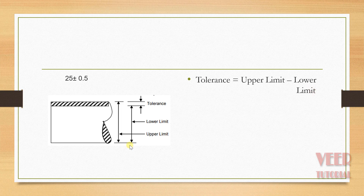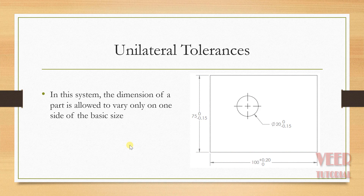So generally tolerances are of two types. First, we have unilateral tolerances. In this system, the dimension of a part is allowed to vary only on one side of the basic size. Suppose we want a dimension of 75 — the dimension varies in only one direction, so the maximum limit is 75 but we can vary down to a minimum limit of negative 0.15. Similarly, for a diameter of 20, the maximum value is 20.0 and the minimum value is 20 minus 0.15.